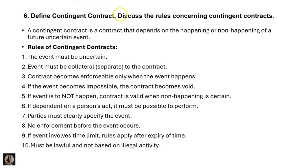The next question: define contingent contract and discuss its rules. A contingent contract is a contract that depends on the happening or non-happening of a future uncertain event.